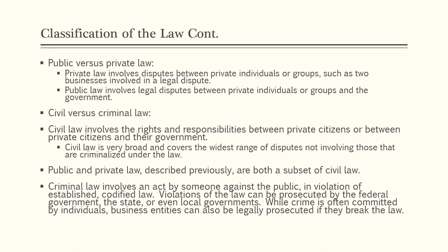Criminal law involves an act by someone against the public in violation of established codified law. Violations can be prosecuted by the federal government, the state, or local governments. Business entities can also be legally prosecuted if they break the law. Most people comprehend laws prohibiting murder, thievery, physical harm, or financial malfeasance. For example, the Department of Justice can criminally prosecute companies cheating investors or committing insider trading or fraud, and the EPA can bring criminal charges against companies that pollute rivers.